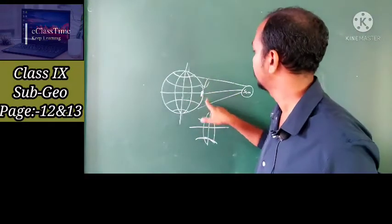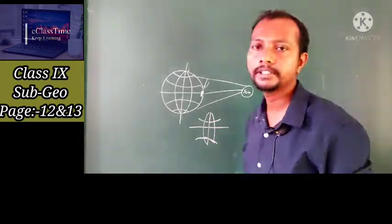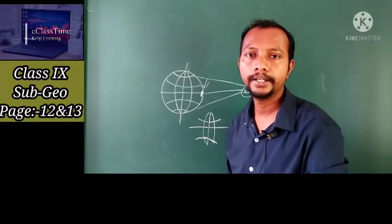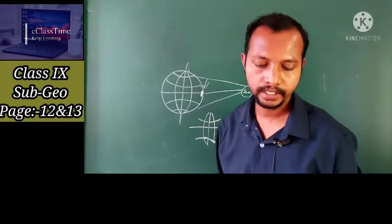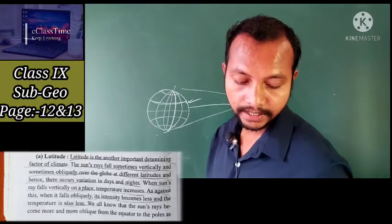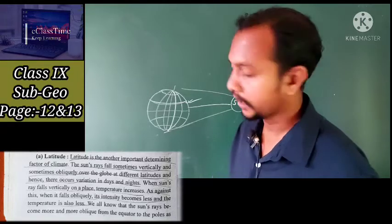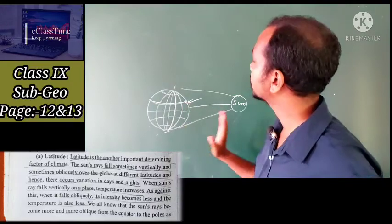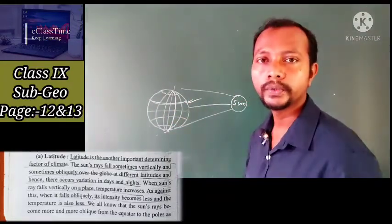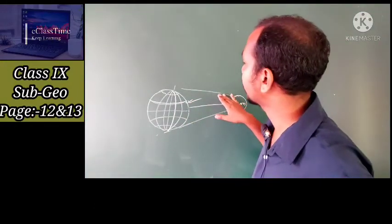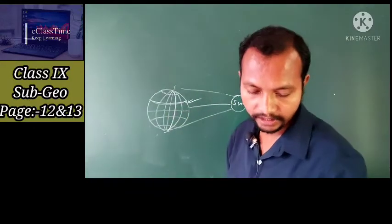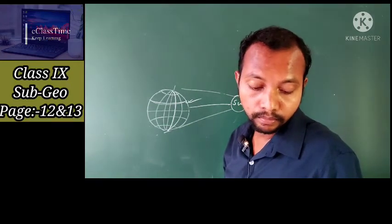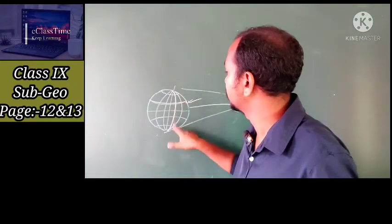Remember: the vertical ray from the sun travels a shorter distance, and the oblique ray going to the northern and southern poles travels longer. Because of the oval shape of the earth, we experience day and night. From the book: sun's rays sometimes travel vertically and sometimes obliquely. When a place turns to the other side it becomes cooler. Sun's rays are more oblique — more bending — at the poles, both northern and southern.